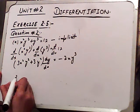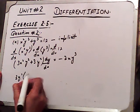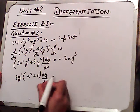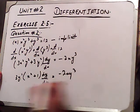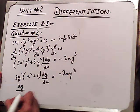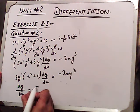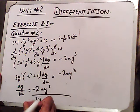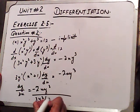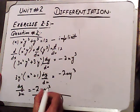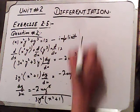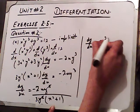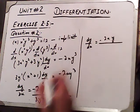Here, 3y squared is common, so we factor it out: 3y squared (x squared plus 1) times dy/dx equals minus 2xy cubed. Therefore dy/dx equals minus 2xy cubed divided by 3y squared (x squared plus 1). The y squared cancels, leaving dy/dx equals minus 2xy divided by 3(x squared plus 1). This is the implicit form answer.